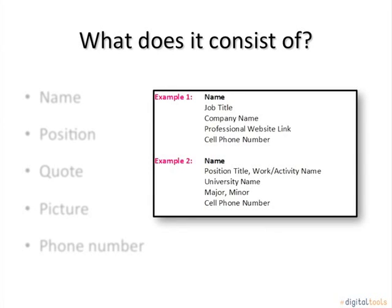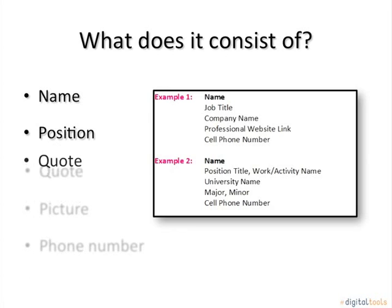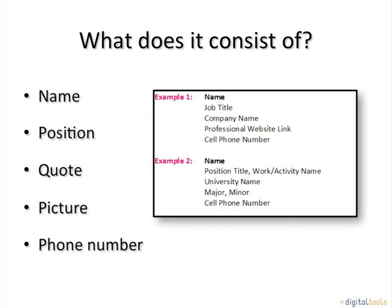What does it consist of? A signature line can contain your name, position, quote, picture, phone number, and or other information. These are just a few examples of what may fall into your own personal signature.